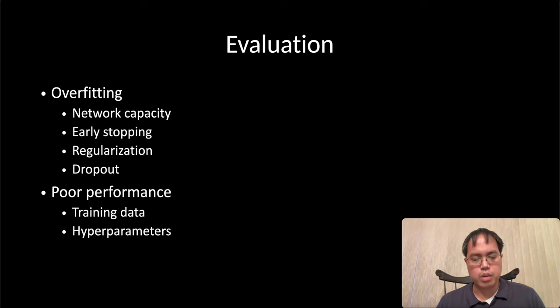With dropout, we use probability to randomly turn off a neuron during training, and decrease the complexity of the model.